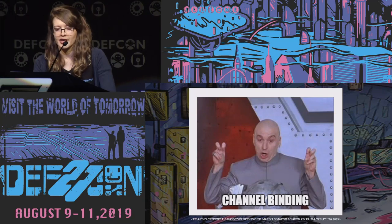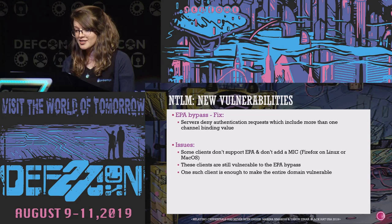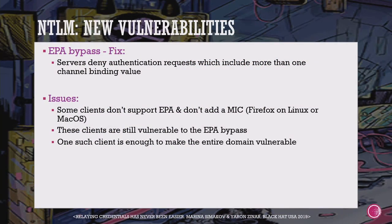The fix for the EPA bypass: if a server receives an NTLM authenticate message with two channel binding fields, it simply denies the request. However, clients that don't support EPA and don't add a MIC — such as Firefox on Linux or Mac OS — remain vulnerable, since attackers can still inject a malicious channel binding and the client won't add a second field for the server to detect.